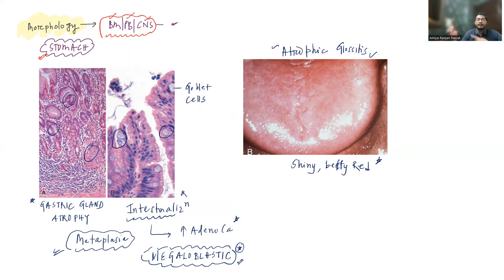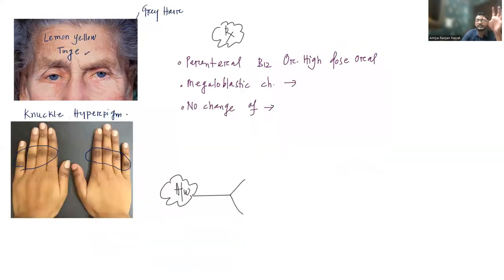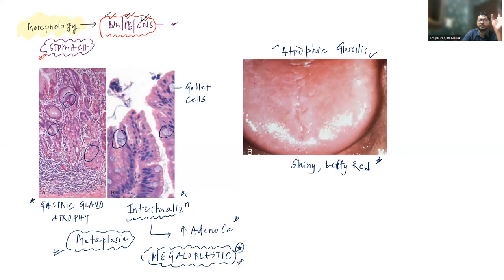To summarize further: these are findings you'll get in any cause of B12 deficiency. The extra things you are going to find specifically in patients with Pernicious Anemia are gastric gland atrophy and intestinalization, leading to metaplastic changes and increased risk of adenocarcinoma.